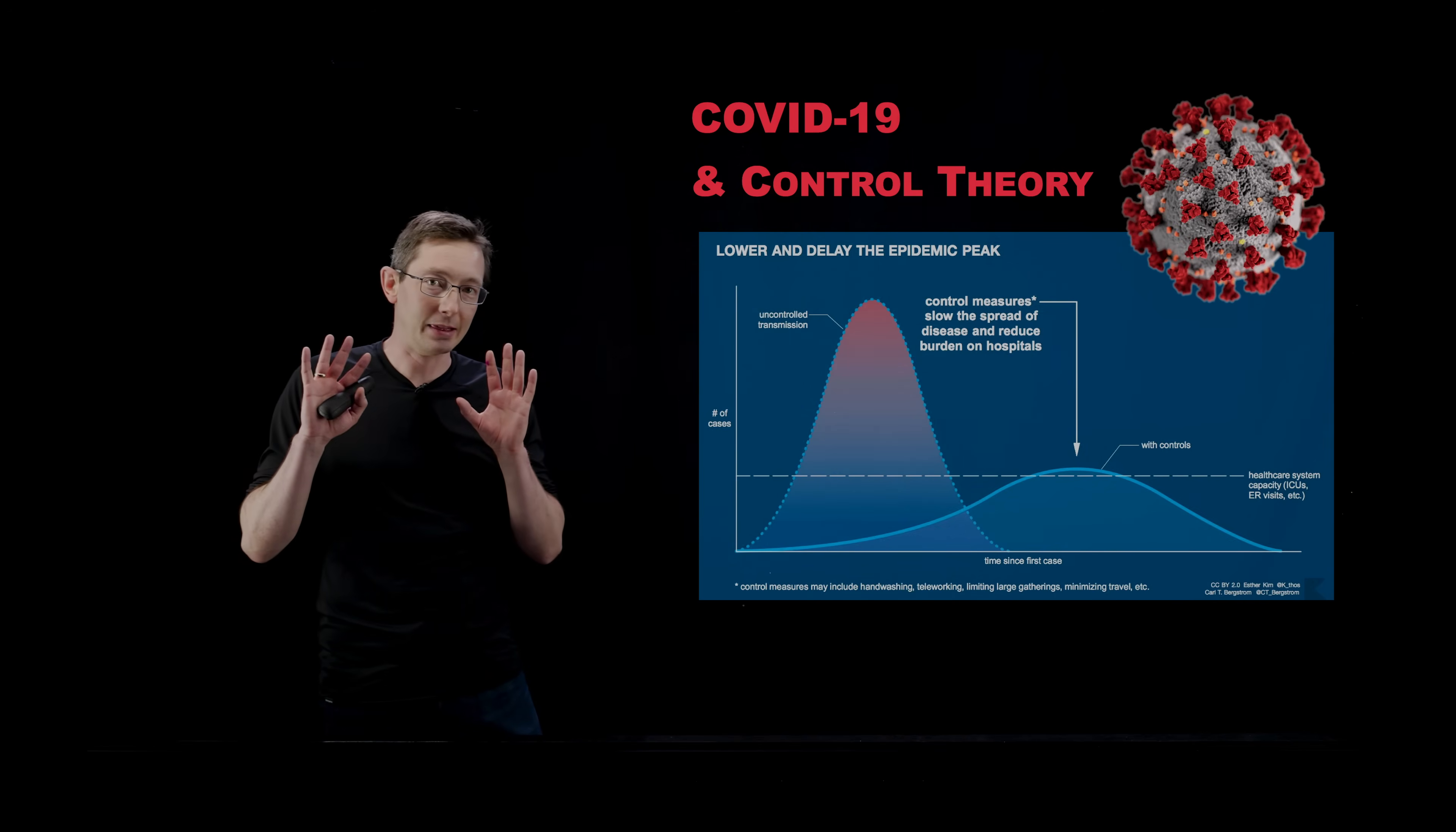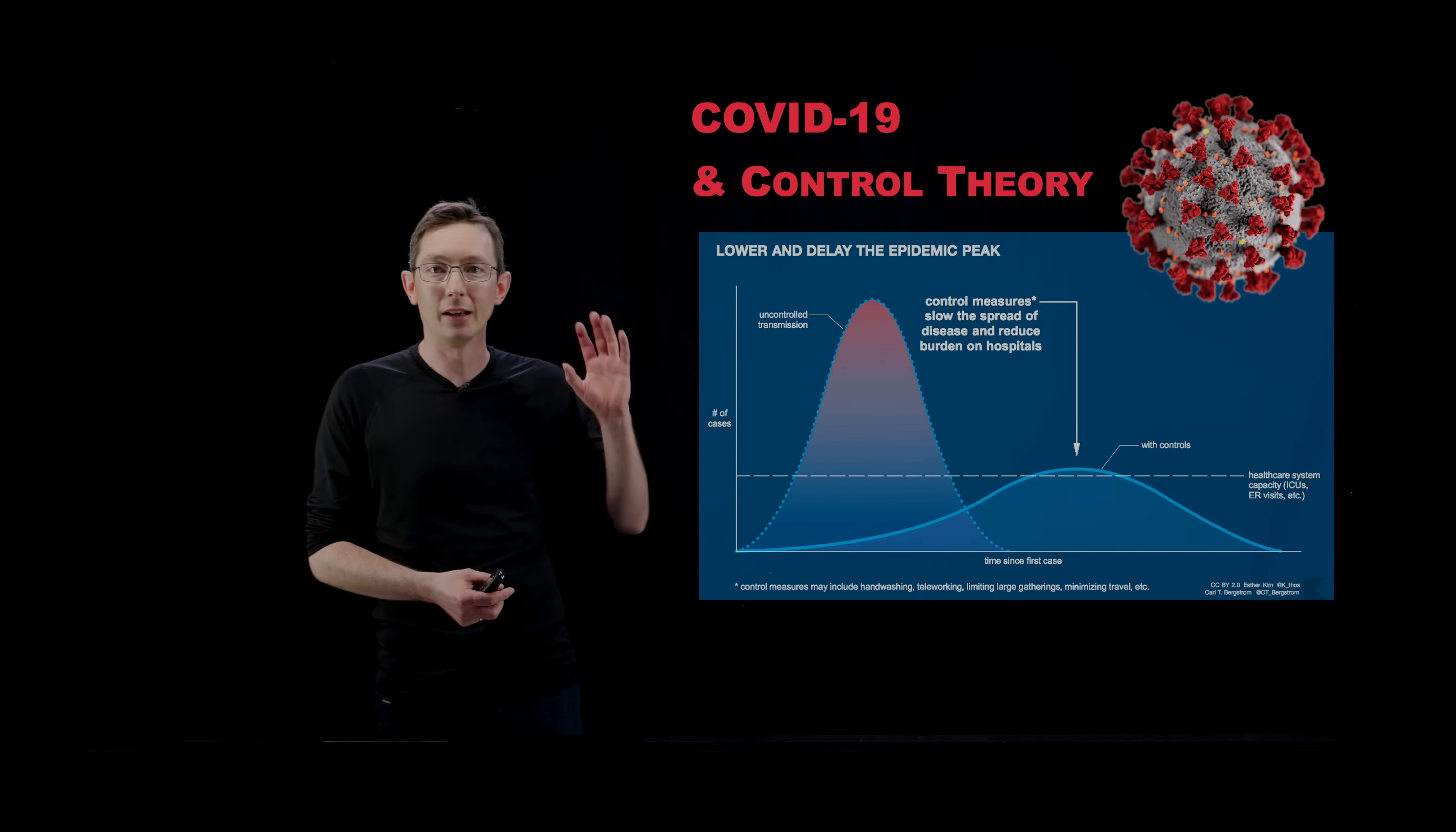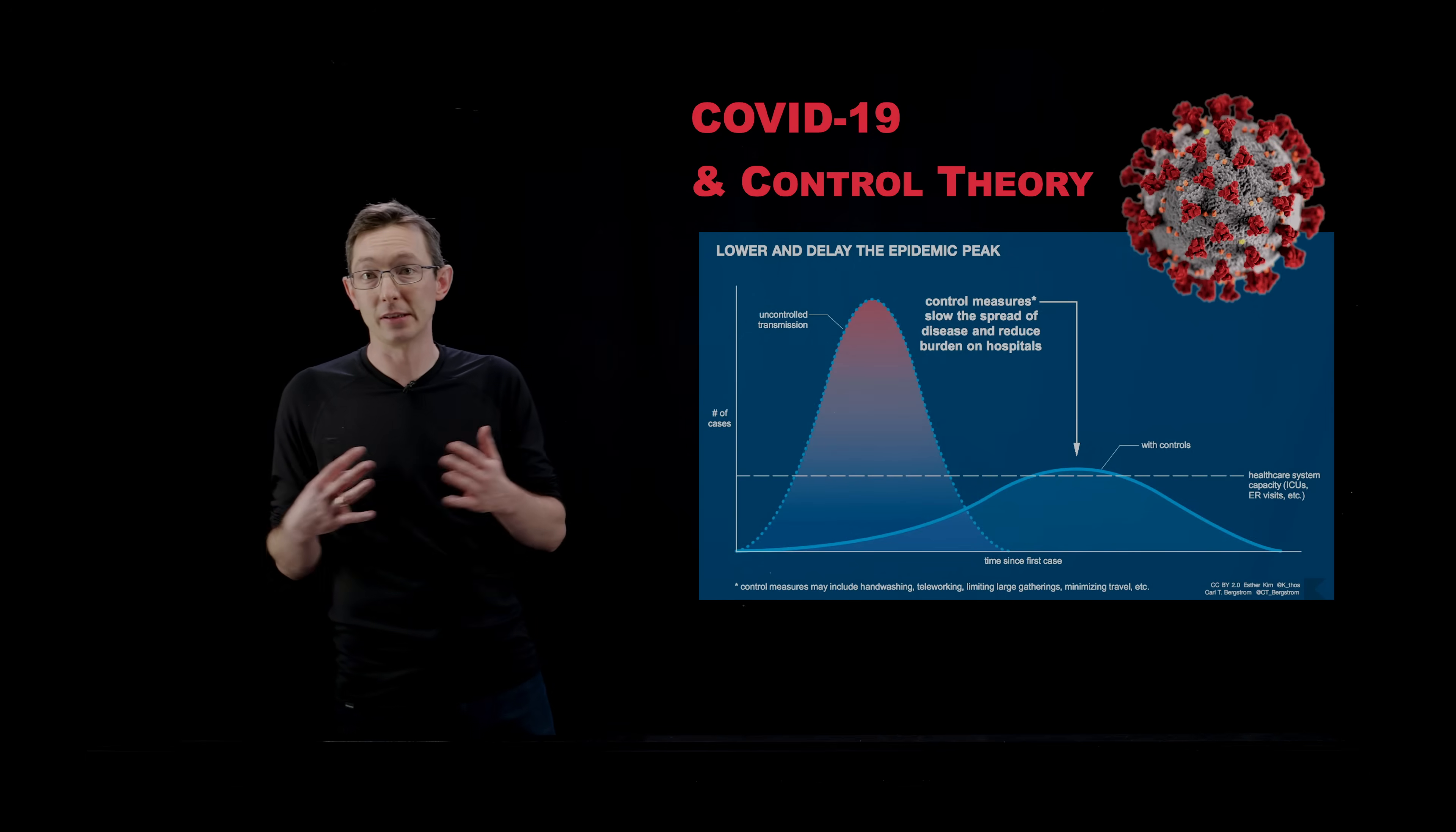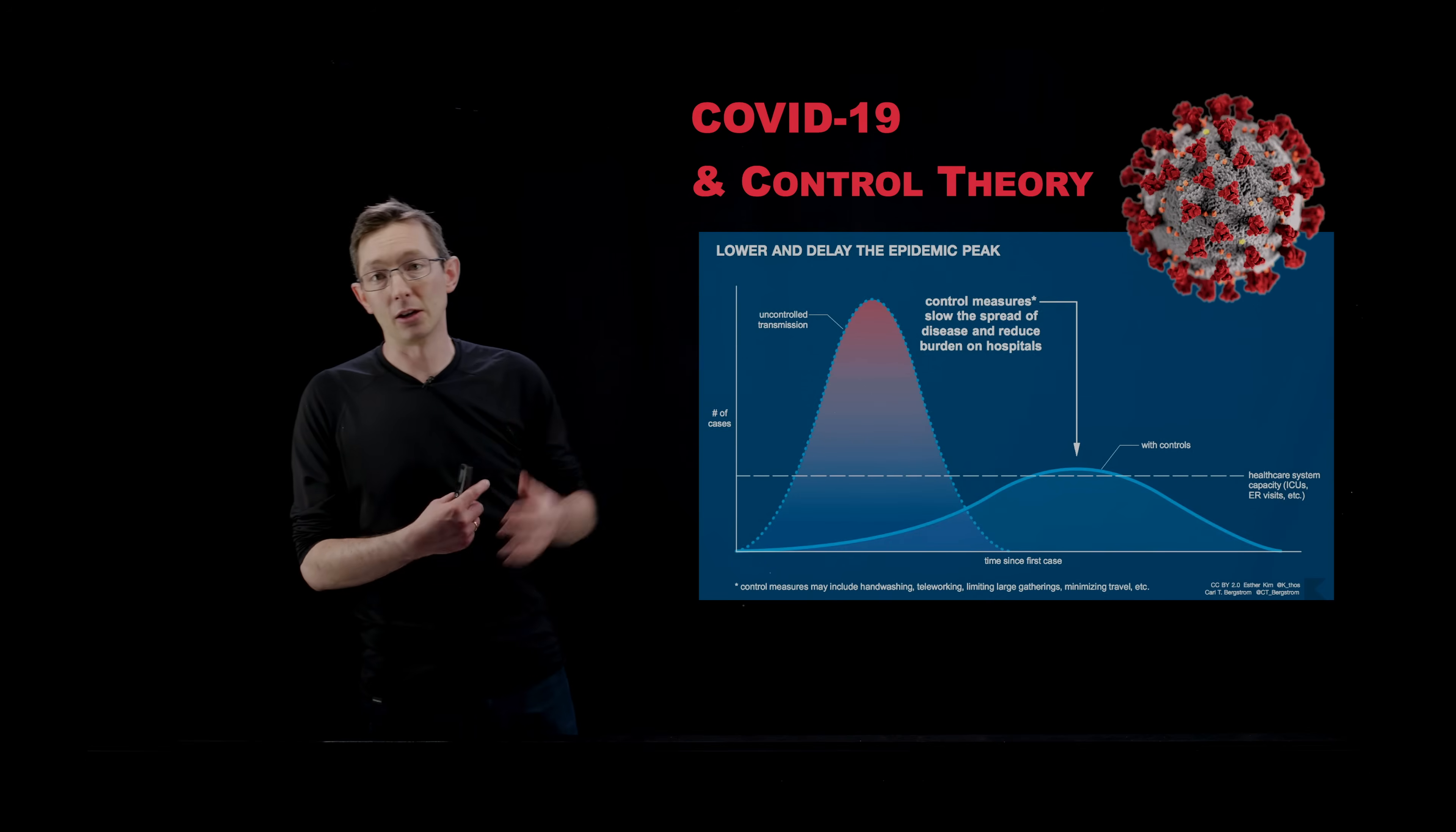And so I want to start off at the very outset with a caveat. No one should make decisions based on what I'm going to talk about here. These should not be used for policy decisions. I'm going to get numbers wrong. I am not going to give any recommendations about what anyone should do. But I have decided to make a short sequence of videos essentially thinking about COVID-19 and controlling or flattening the curve from the lens of control theory.